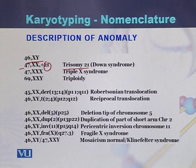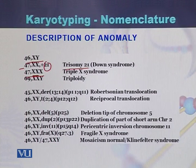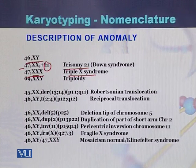In the next case, written as 47,XXX, triple X means the X chromosome is present in three forms. In a normal female there are only two X chromosomes, but here there are three. This condition is called Triple X syndrome.